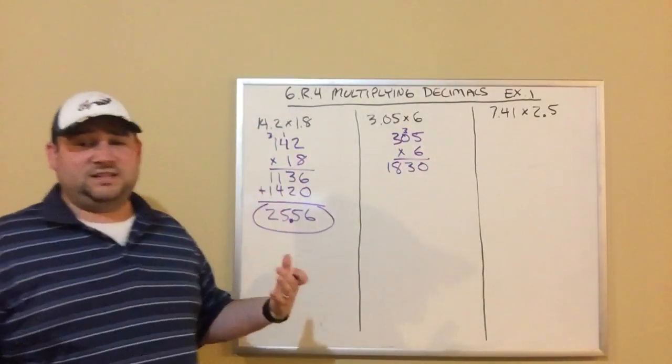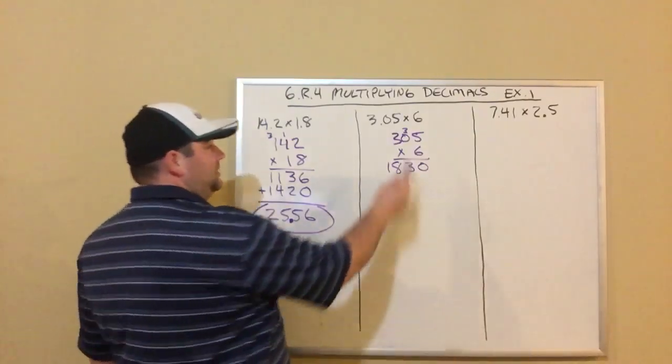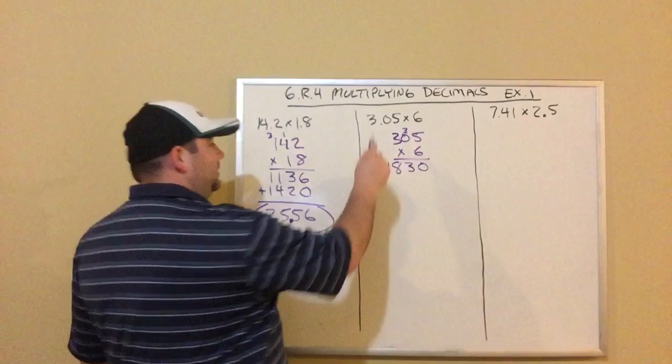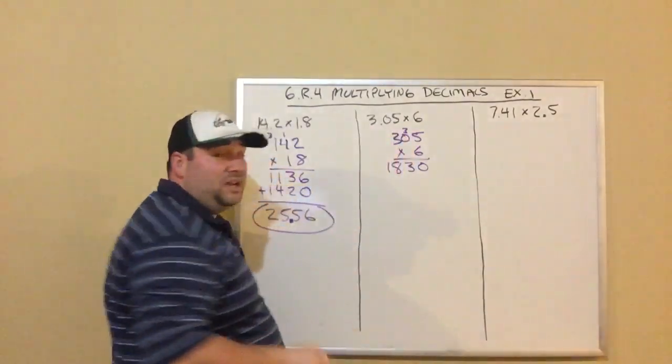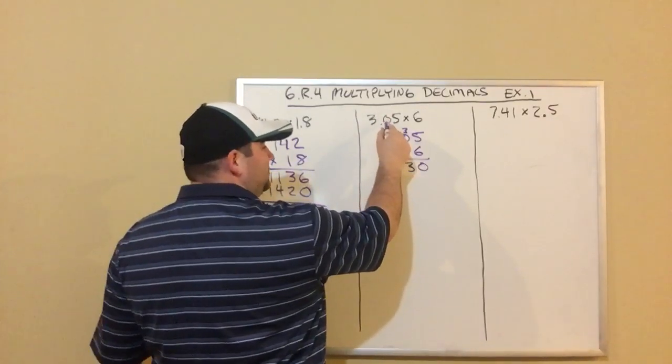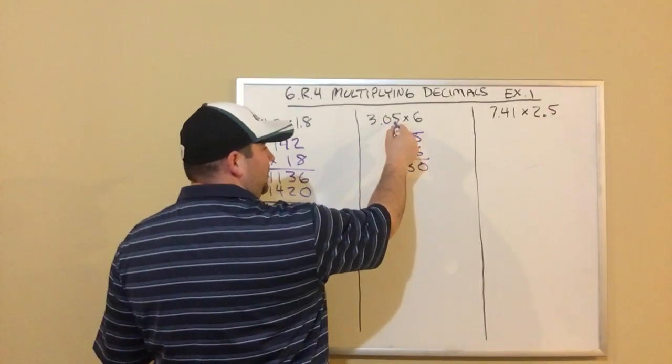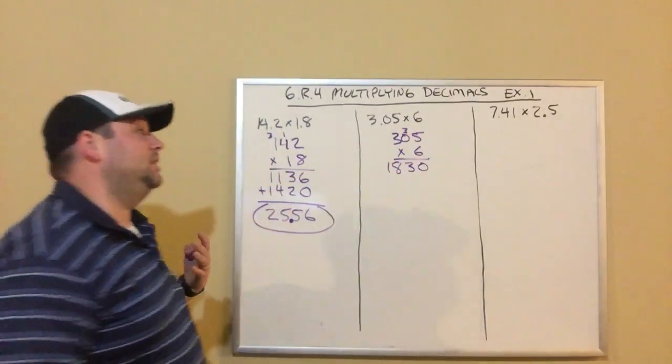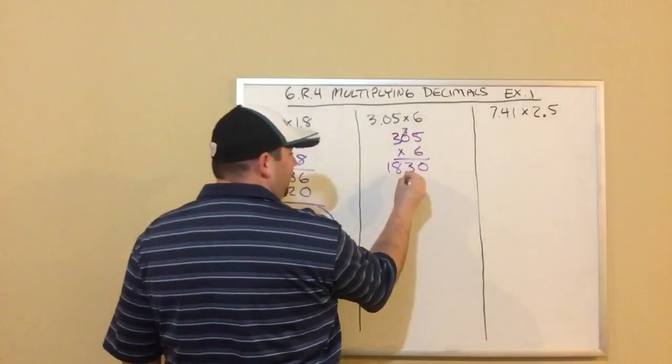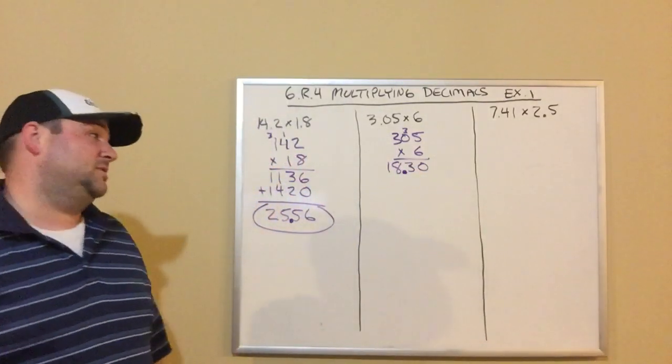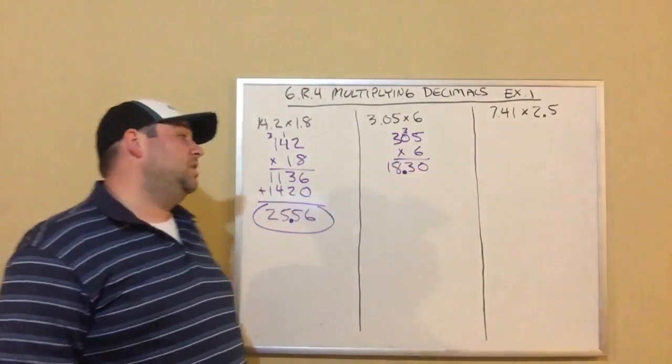But I got to figure out where my decimal point goes. So I'm going to go up to the original problem and figure out how many digits were after the decimal point. I look, 1, 2. This 0 does count as a digit because it's before another number, so this counts. That's 1, 2 digits after the decimal point in 3.05. 6 has no digits after the decimal point, so that means there's only going to be 2. In our answer, there's got to be 2 digits after the decimal point.